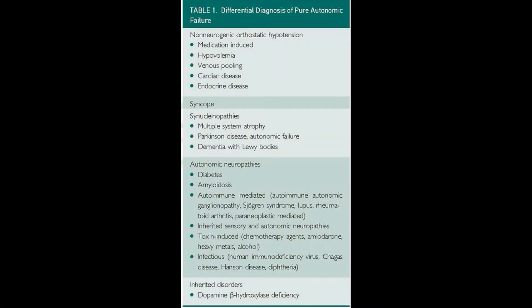To make the diagnosis of pure autonomic failure, we rely on the 1996 criteria, which calls for orthostatic hypotension with some inclusion of other autonomic dysfunction. We also know that these patients may have dream enactment behavior, a finding common in this class of alpha-synucleinopathies.